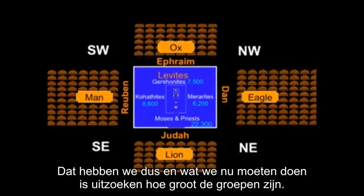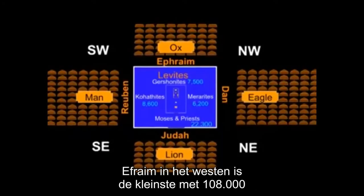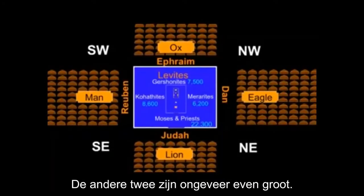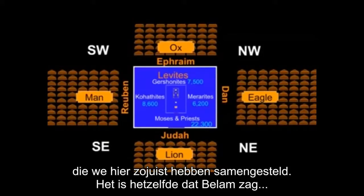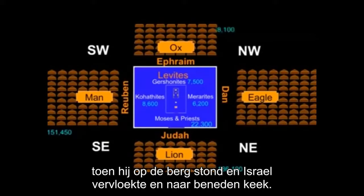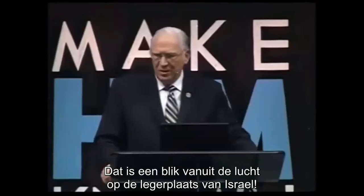Now what we need to do is figure out the populations. Judah is the largest with 186,000; Ephraim to the west is only 108,000 — it's the smallest. The other two are about the same. I want to show you an aerial picture that's in your Bible that we've just constructed here for you. It's the same thing that Balaam, when he was on the hill cursing Israel, looked down and saw.